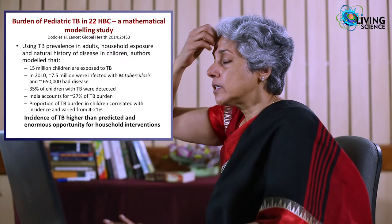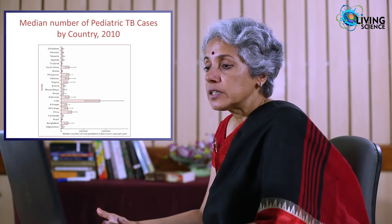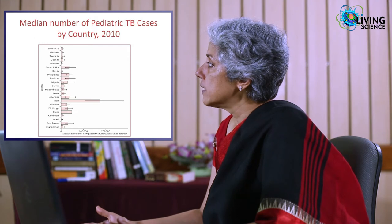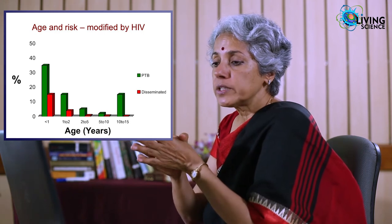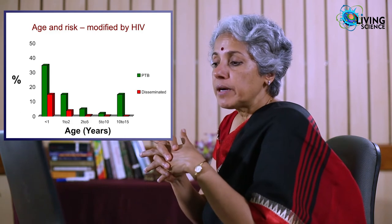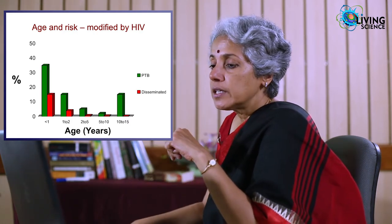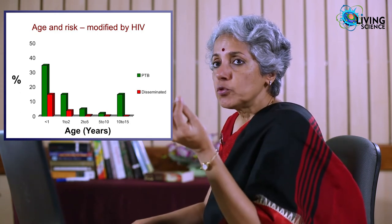TB in children mirrors the pattern in adults, and India again is number one with almost 200,000 estimated pediatric TB cases per year, but less than half are actually reported and treated in the program. A baby in the first year of life who is in contact with a TB case in the household is much more likely to progress to severe disease — pulmonary TB, meningitis, or disseminated TB — because of a poorly developed immune system. The risk declines with age but rises again during adolescence.